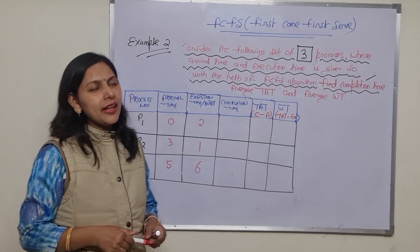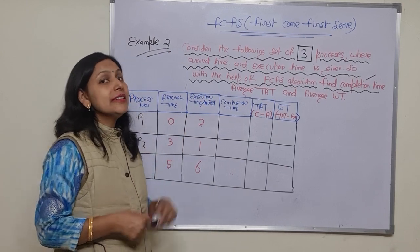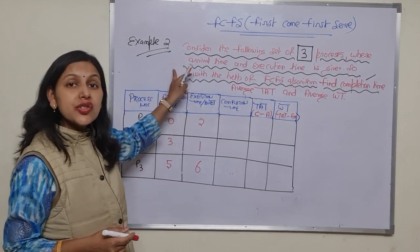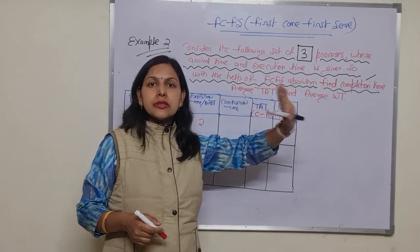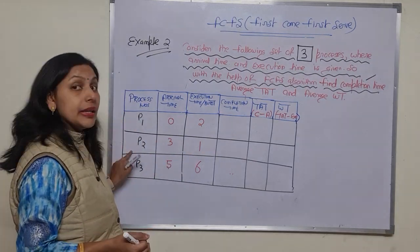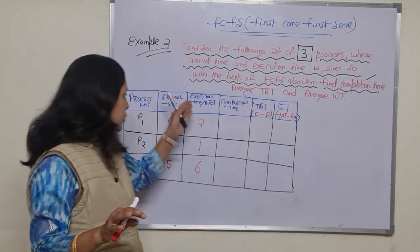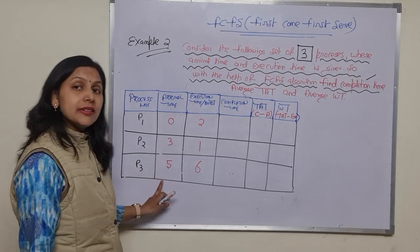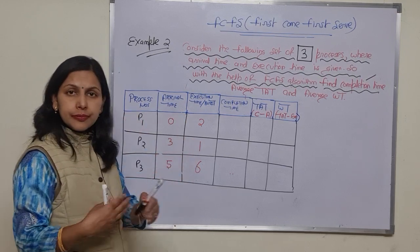Welcome back. In this video I will show you another example regarding the FCFS algorithm. In this example, the total number of processes given is three: P1, P2, and P3. The arrival time and execution time are already given. The arrival times are 0, 3, and 5 for P1, P2, and P3 respectively, and the execution times are 2, 1, and 3.